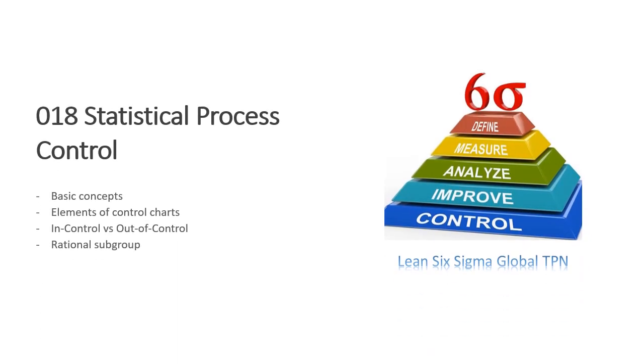Alright, so today we start the first lesson of Statistical Process Control or SPC. In this lesson, we talk about the basic concepts of control charts, the elements of a control chart, in-control and out-of-control processes, and finally rational subgroups when collecting data for a control chart. Let's get started.